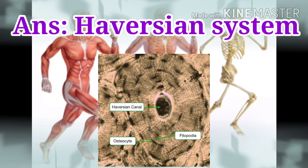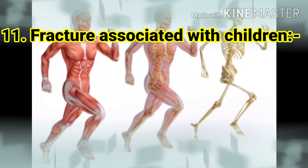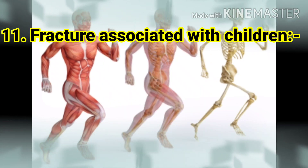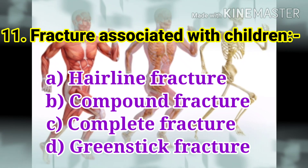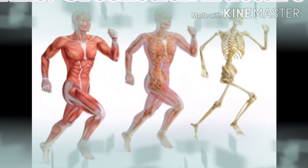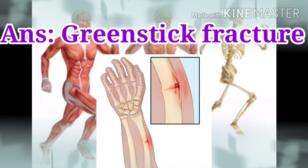The next question: fracture associated with children. The options are hairline fracture, compound fracture, complete fracture, and greenstick fracture. The answer is greenstick fracture.